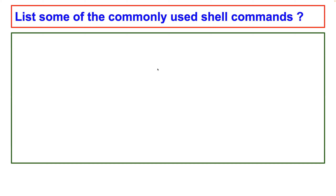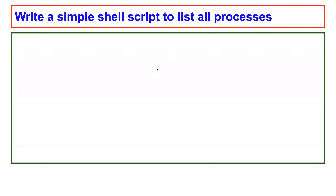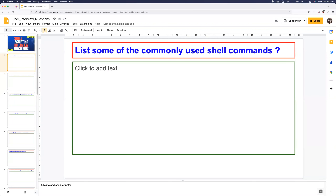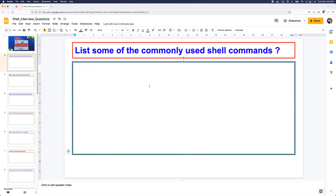The first question — there's a reason I put this as the first one. Whenever you're doing a shell scripting interview, the interviewer always tries to understand what you know about shell scripting, whether you use it on a day-to-day basis. So whenever somebody asks you to list the most commonly used shell commands, be very honest and tell what commands you use daily — like ls to list files, cp, mv, mkdir to create directories, touch to create files, vim to open files, grep to filter output.